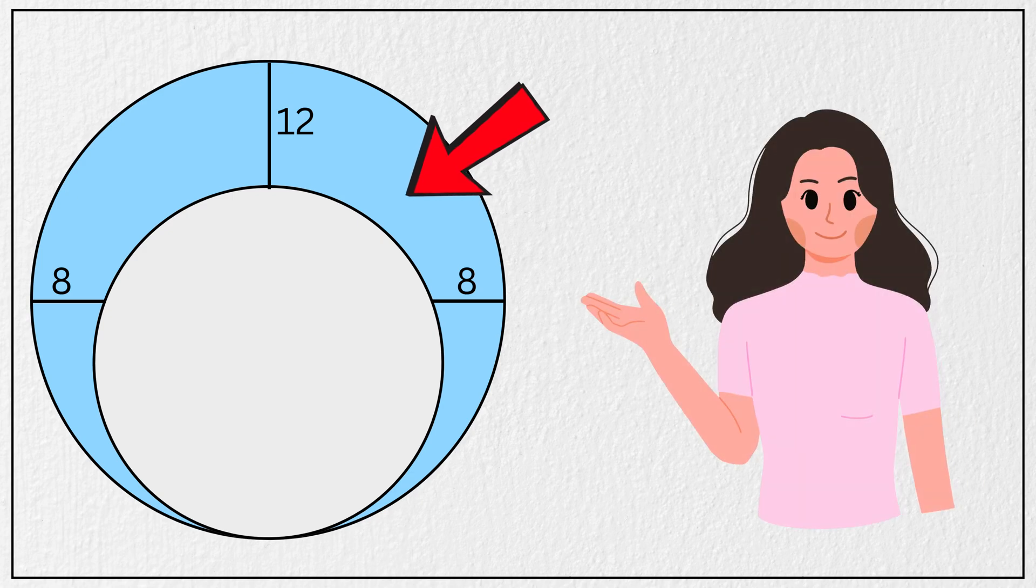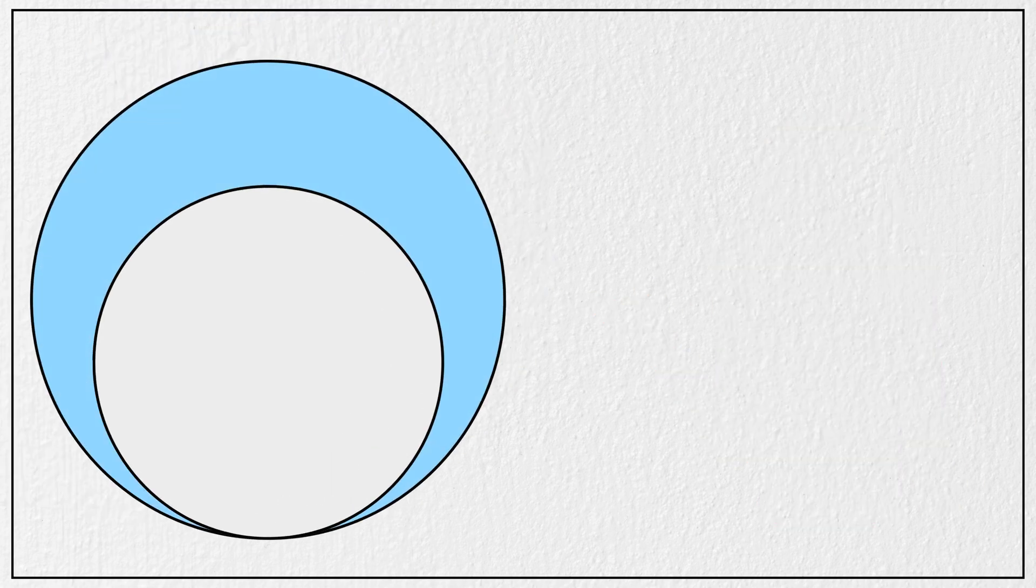Can you find the area of this blue shaded region? We are given two circles touching internally like this, and this vertical distance from the top of the smaller circle to the top of the larger circle as 12 units.